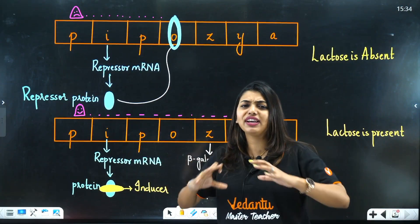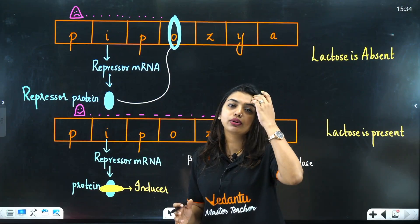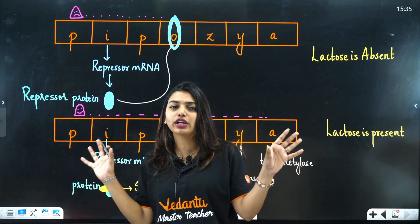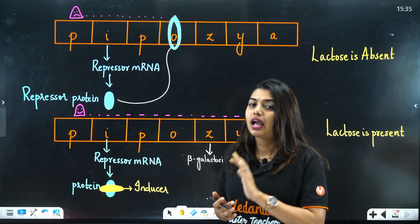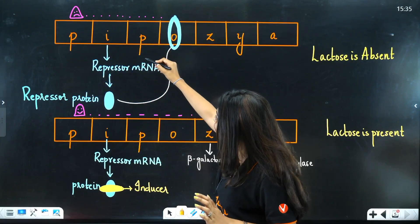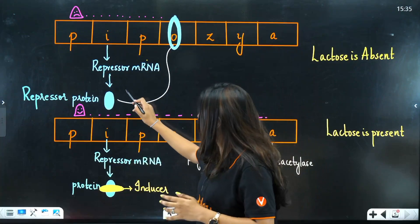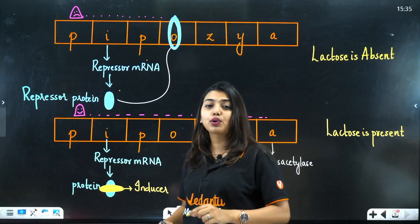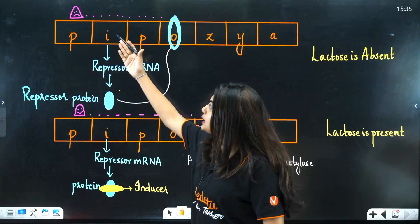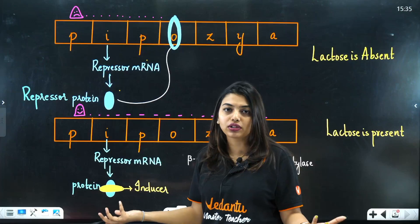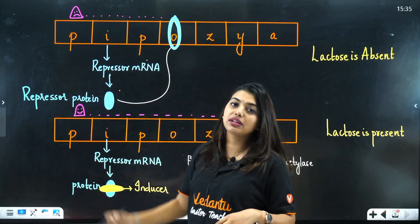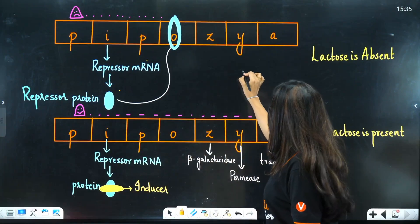When lactose is absent and E. coli has enough glucose — life is happy — the I gene forms repressor mRNA, which forms the repressor protein. This repressor protein binds to the operator, blocking RNA polymerase from proceeding with transcription. Just like a full road block stops traffic, RNA polymerase cannot move further, and the gene gets switched off.